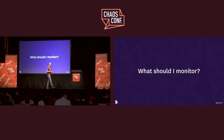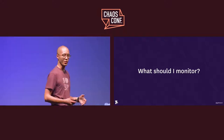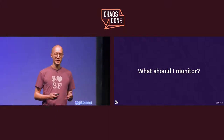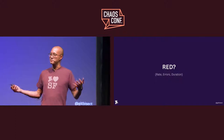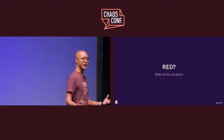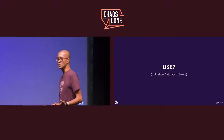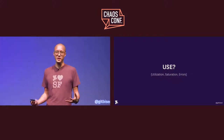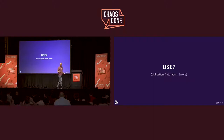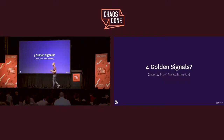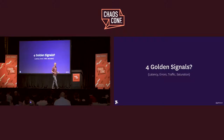So, people ask me this all the time: what should I monitor? People start throwing around these terms or these frameworks. Should I use RED, which is rate, errors, duration? Should I use USE — which makes you sound like a New Jersey mobster — which is utilization, saturation, and errors? And then the new hot thing is the four golden signals, right? If it's good enough for Google to be promoting this in the SRE book, then it should be good enough for me.